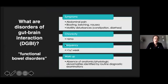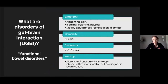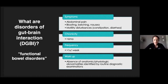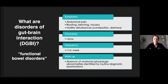What are disorders of gut-brain interactions? These used to be called functional bowel disorders, but we're transitioning to terminology that better reflects the pathophysiology — though you might still hear people call them functional bowel disorders. They are characterized by any combination of abdominal pain, bloating, belching, nausea, distension, and motility disturbances like constipation or diarrhea — any constellation of those symptoms present for over six months, persistent and occurring at least once a week, with an absence of anatomic or physiologic abnormality on routine diagnostic examinations.